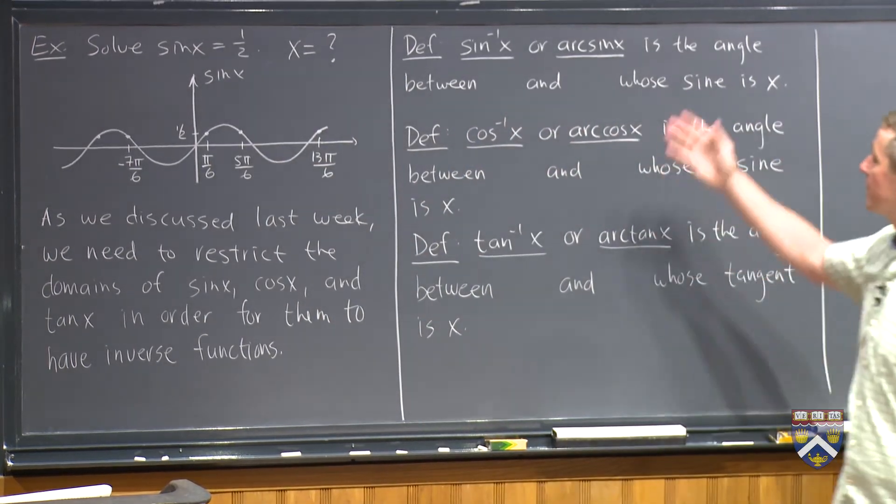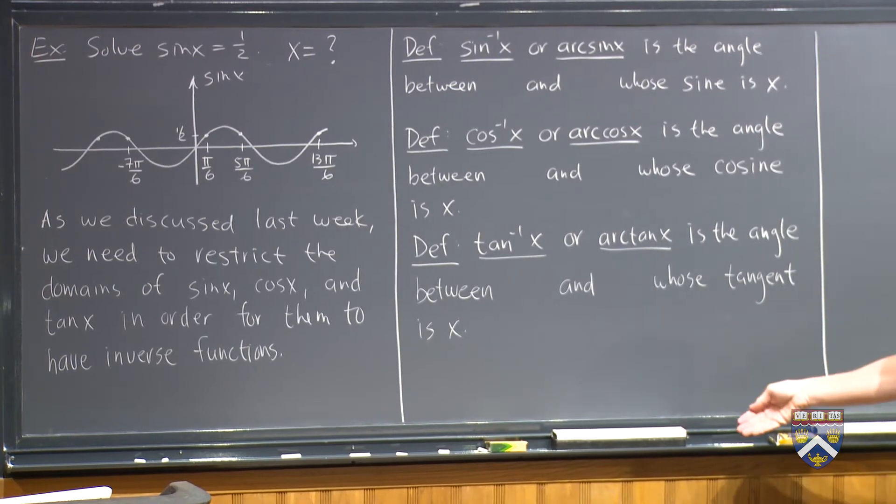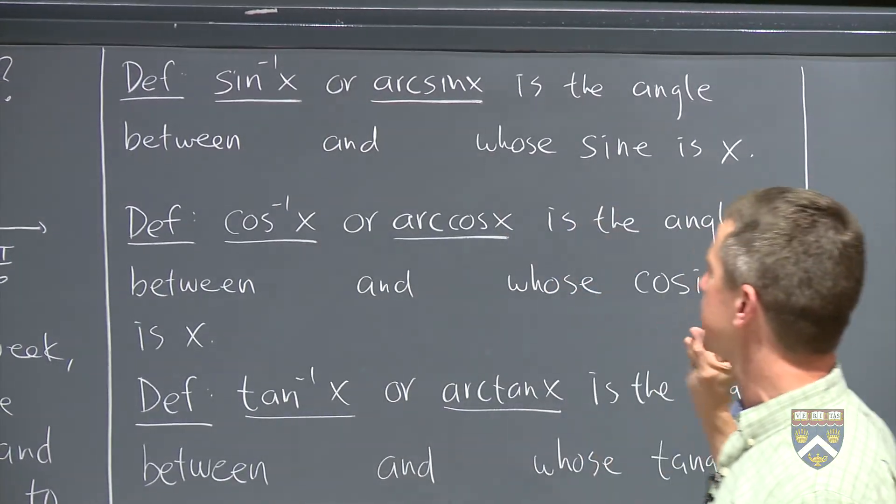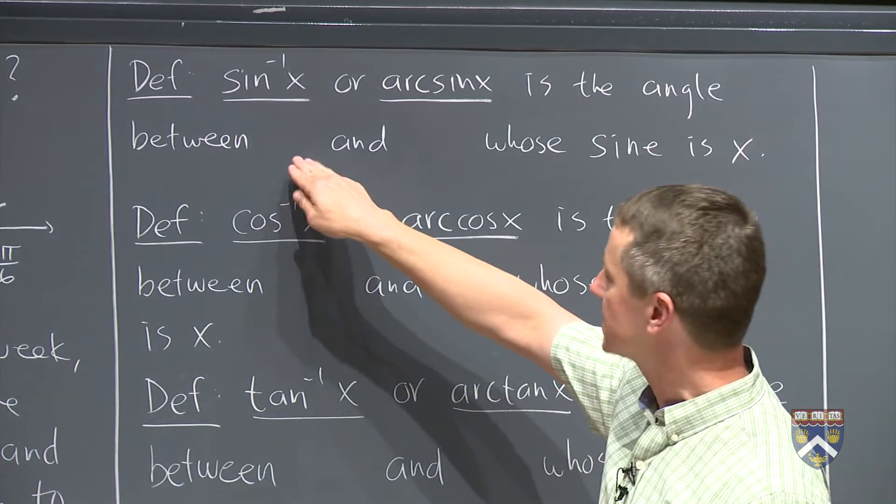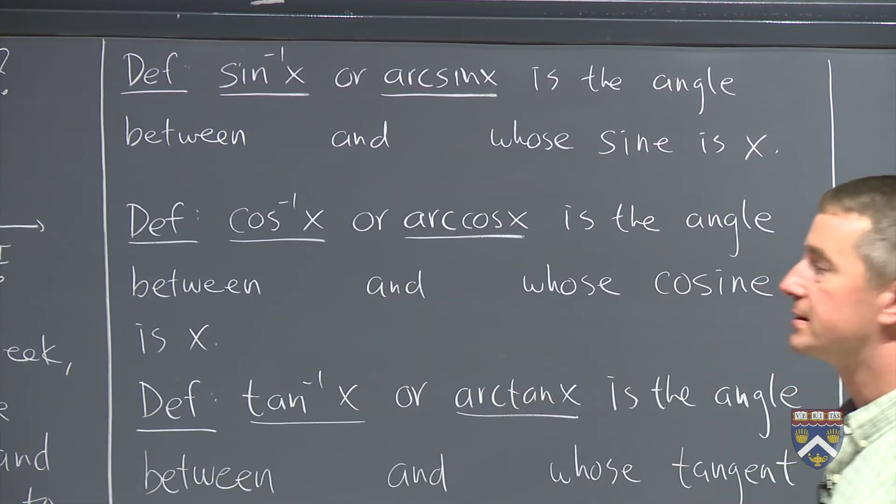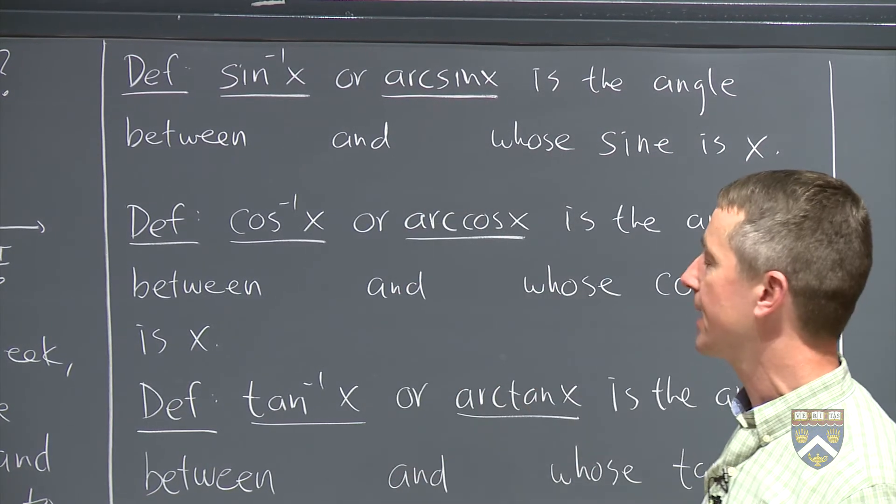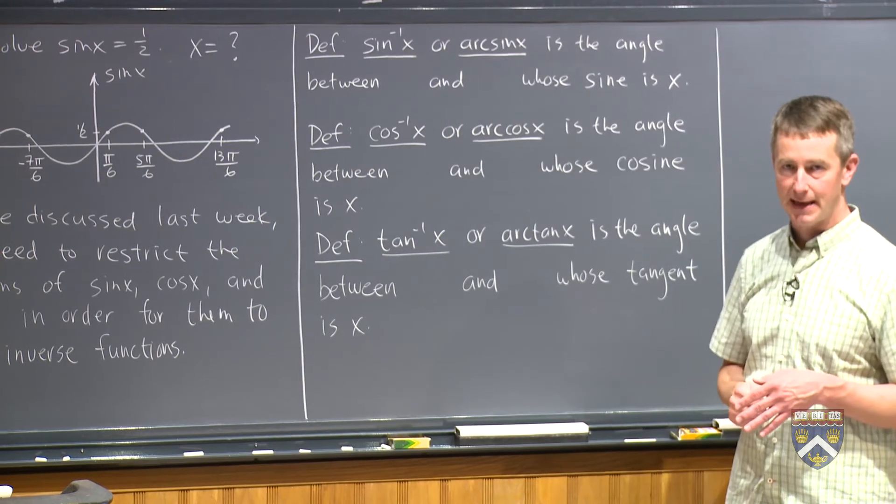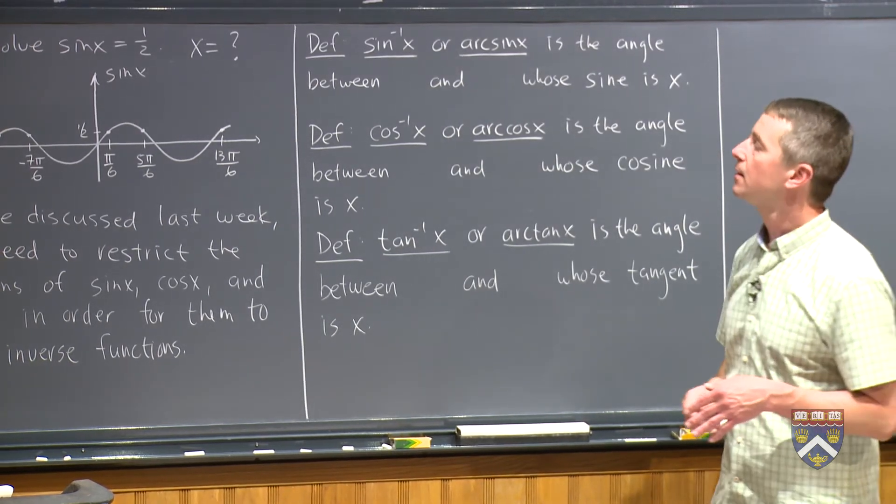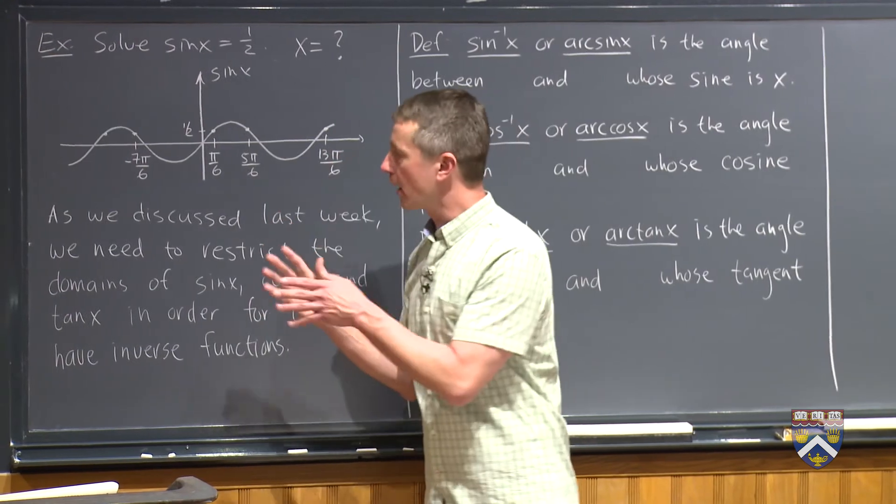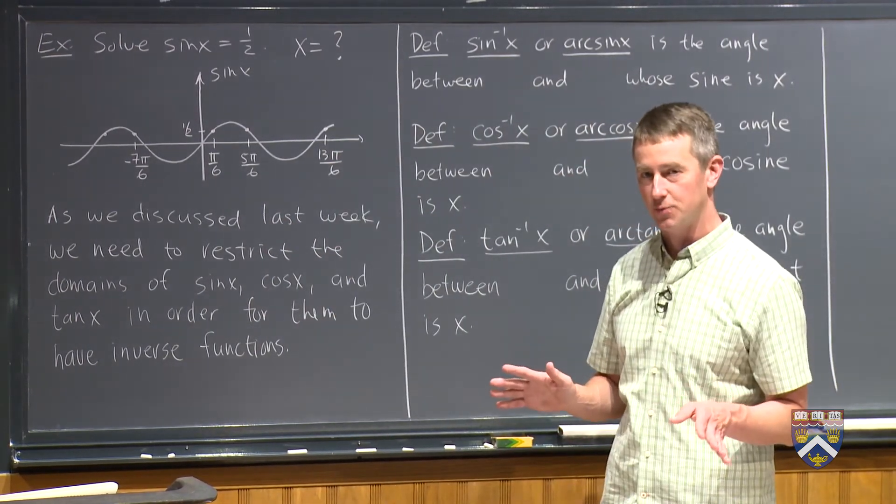In other words, we'd like you to fill in the blanks for these definitions. Inverse sine of x, which is also called arc sine of x, is the angle between somewhere and somewhere whose sine is x. So by looking at the graph and the same with cosine and tangent, by looking at those three graphs in the applet that we're going to have you explore with, find a region of the domain where all the y values appear and no y value appears twice.